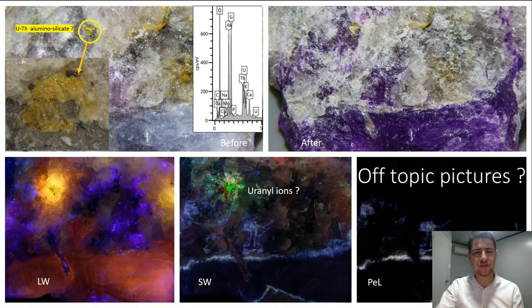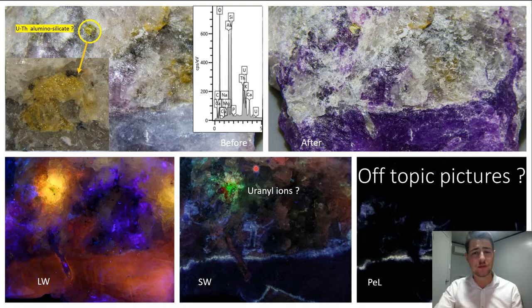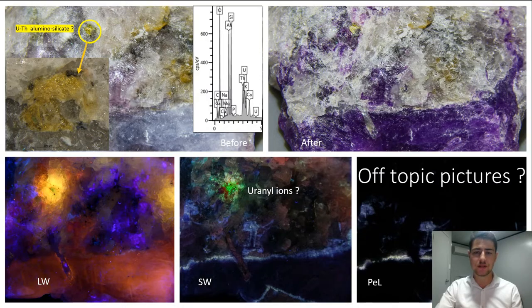If I keep listing other luminescence found in these samples, I've got that undetermined uranium-thorium aluminosilicate that triggers similar orange fluorescence in long-wave by emitting alpha particles ripping off electrons of S22-, but the interesting property of introducing some uranyl ions and a very green fluorescence in short-wave, and the same persistent luminescence.